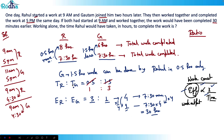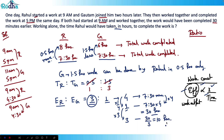Now I want to find the time taken by Rahul alone to complete the work. Rahul's efficiency is 3. At 1 efficiency it takes 30 hours, so at 3 efficiency time reduces 3 times: 30 ÷ 3 = 10 hours. That is the answer.